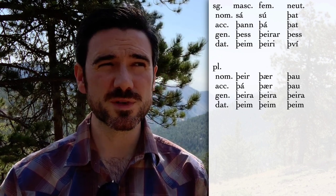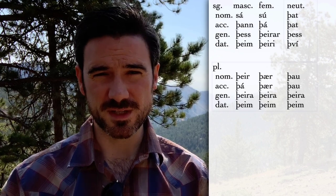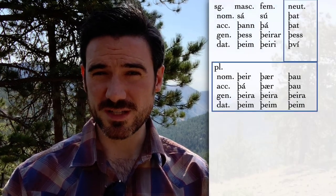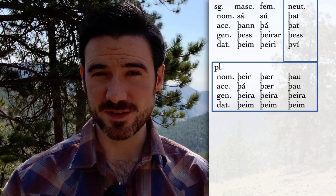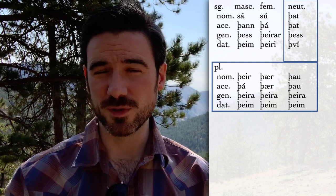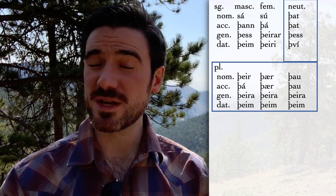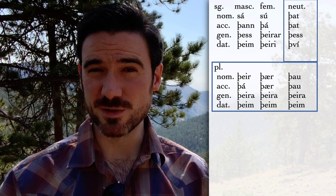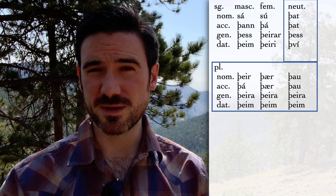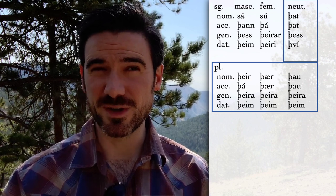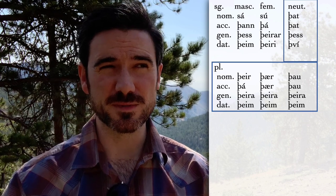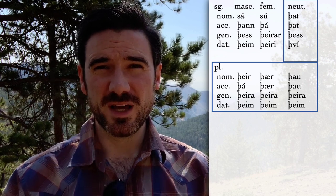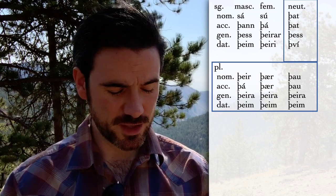Notice that you already know four sixths of this, because the plurals are the exact same as the forms for 'they', 'them', 'their'. You can celebrate quietly or otherwise as you choose. And the forms for 'that' and the neuter singular are the same as the forms for 'it'. In fact, that is where those forms for 'it' and 'they' come from — ultimately from these pronouns meaning 'that' and 'those'.